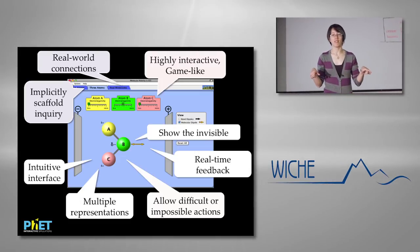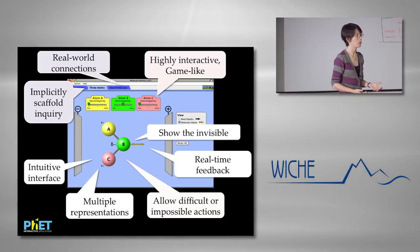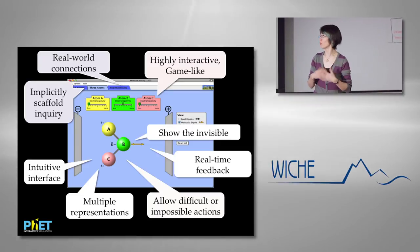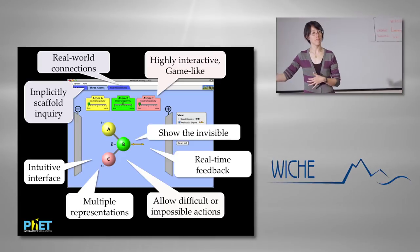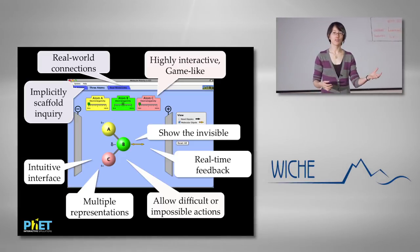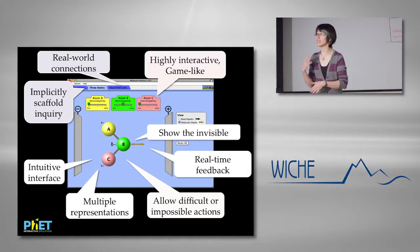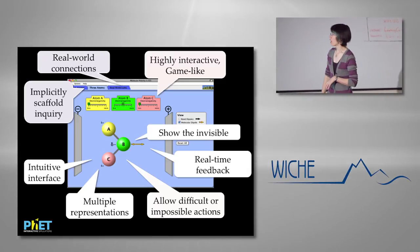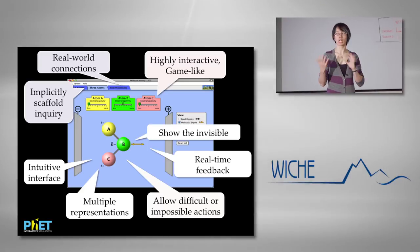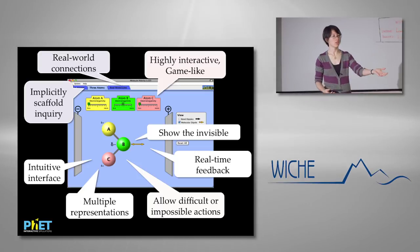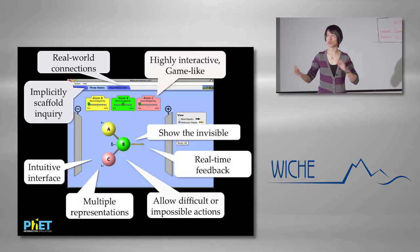Where pedagogically relevant, we allow for difficult or impossible actions. In Molecule Polarity you can adjust the angle between atoms to create different molecules — you can't do that with real molecules. You can also adjust the electronegativity of each individual atom, which isn't possible in the real world, but we do that because we're focusing on how those parameters affect molecule polarity. We also try to use multiple representations where relevant — Color Vision shows both a photon representation and a beam representation of light.